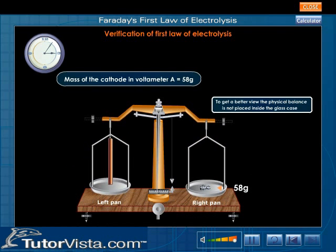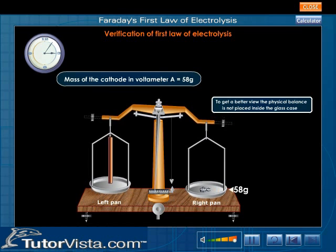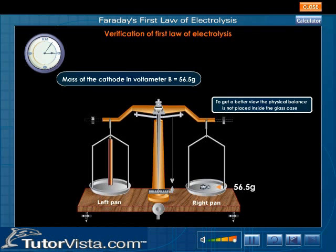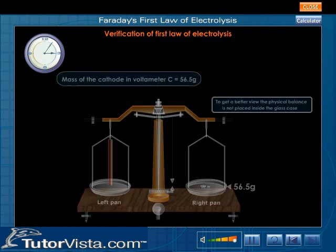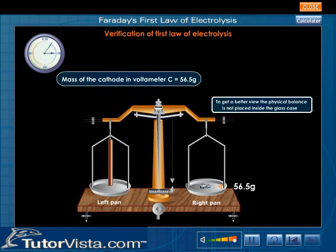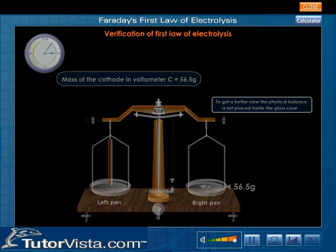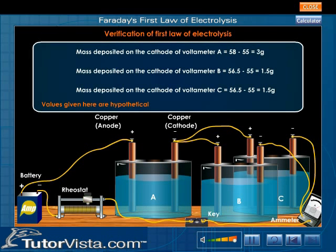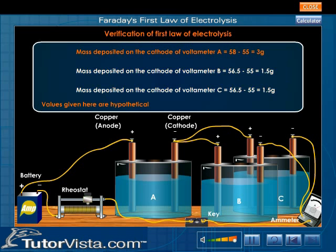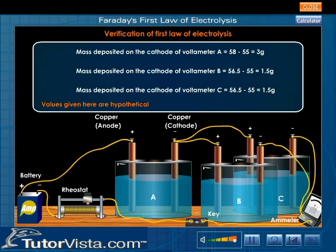Remove the cathodes and find the mass of each cathode. We observe that the mass deposited on the cathode of voltameter A is twice the mass deposited on the cathodes of voltameters B and C. The mass deposited on each cathode is proportional to the amount of current passing through it. This verifies Faraday's first law of electrolysis.